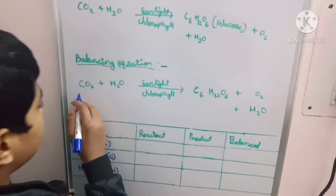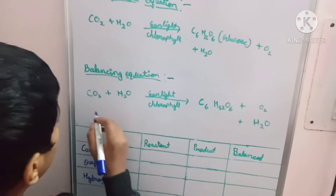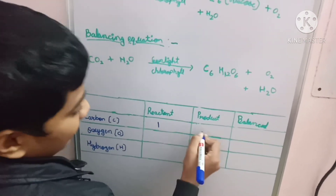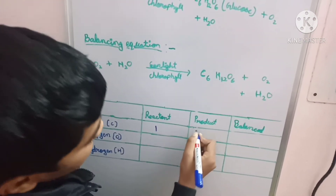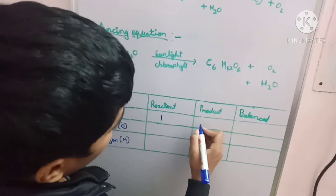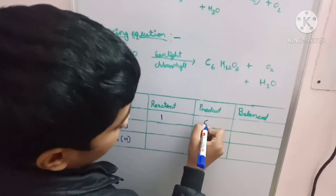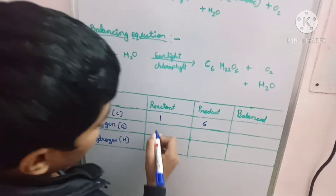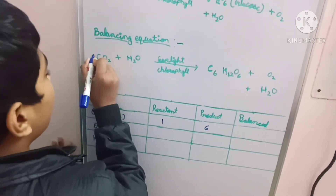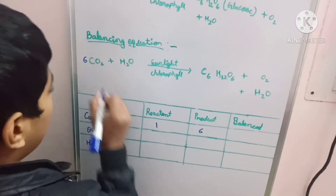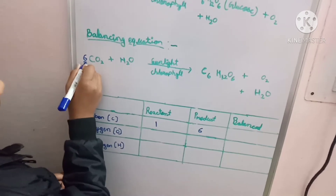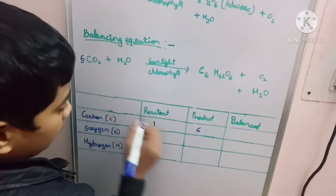On the reactant side there is one carbon, and on the product side there are six carbons. To balance this, we have to add six in front of CO2 on the reactant side, so both sides then equal six carbons.